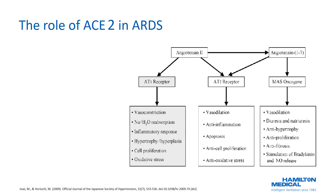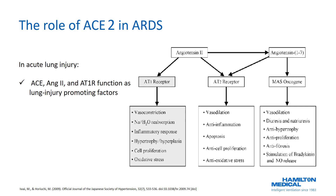Angiotensin 2 exerts its effects mainly through attachment to the angiotensin type 1 receptor, resulting in vasoconstriction, sodium and water retention, inflammatory response, hypertrophy, hyperplasia, and cellular proliferation including oxidative stress. Angiotensin 1-7 exerts effects through attachment to the angiotensin type 2 receptor, with effects almost the exact opposite of angiotensin 2. In the context of acute lung injury, ACE1 and angiotensin 2 act as pro-injury promoting factors, while ACE2 protects from lung injury.